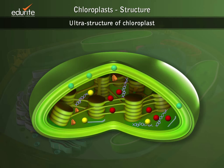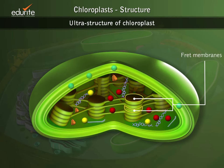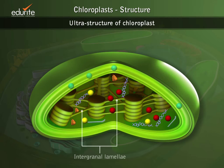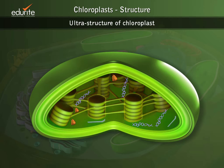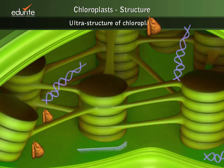The thylakoid membrane is a network of membrane-bound flattened discs called thylakoids, which are arranged in stacks called grana. The membranes of thylakoids are called fret membranes, and the grana are interconnected by tubular membranes called the inter-granal lamellae. Each chloroplast may contain 10 to 30 granule clusters, with a single granum comprising about 20 to 60 thylakoids.